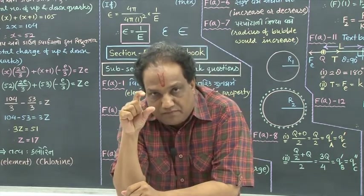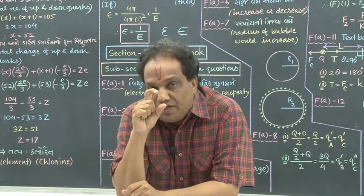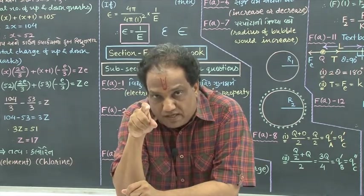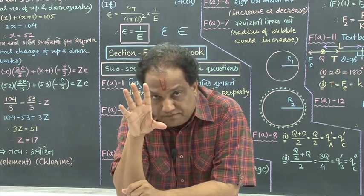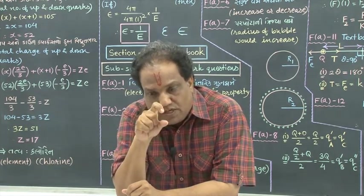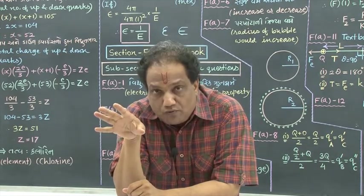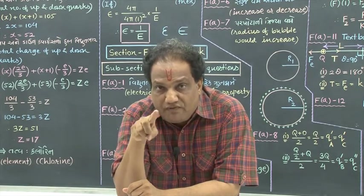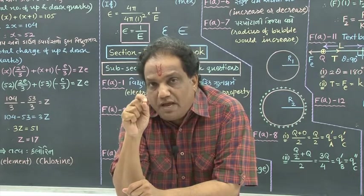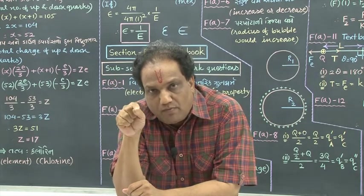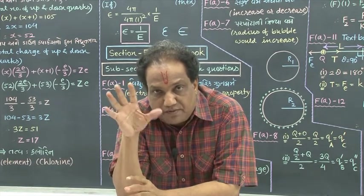Inside each atom of one element, the number of down quarks is greater than the number of up quarks by 1. And if the total number of up and down quarks in that atom is 105, then the type of element is dash. You were supposed to find out the type of element. This same problem I had given you in extra point number 2, perhaps in the second lecture of this chapter.